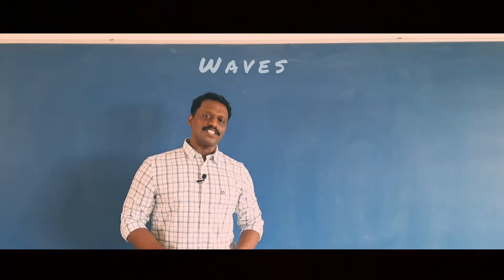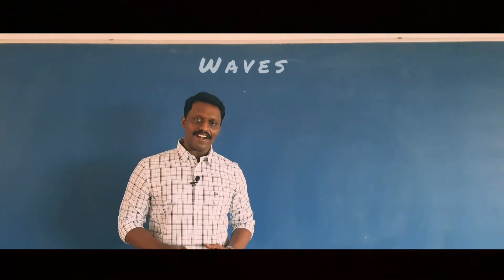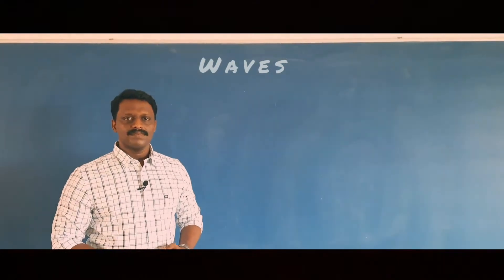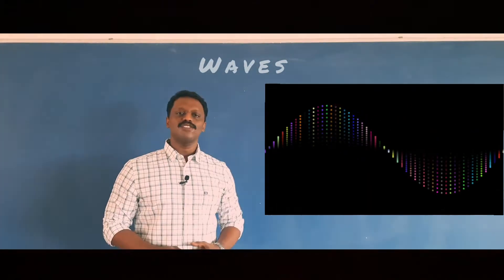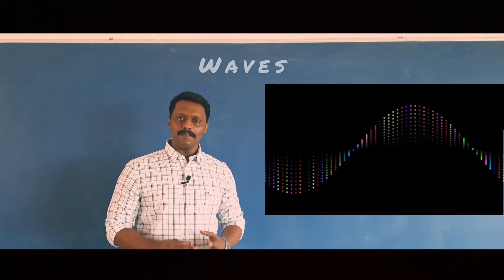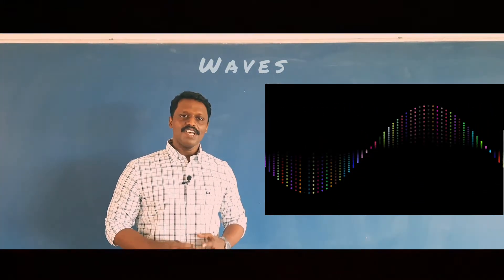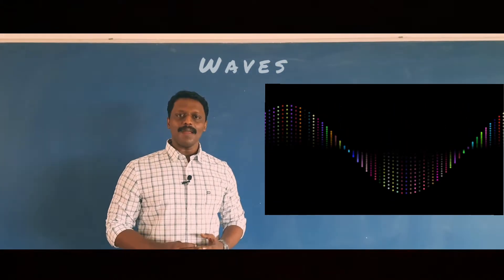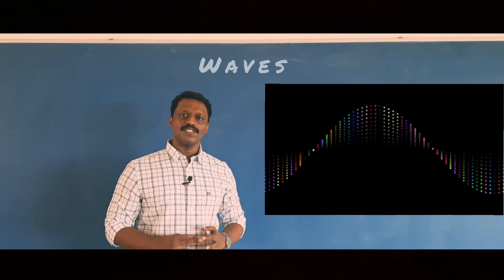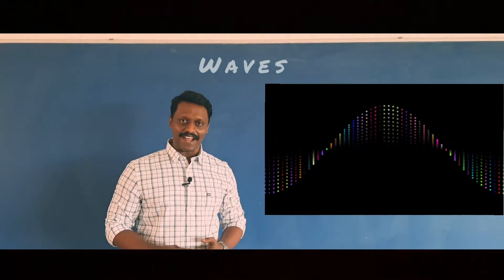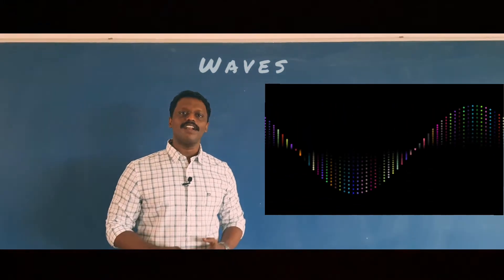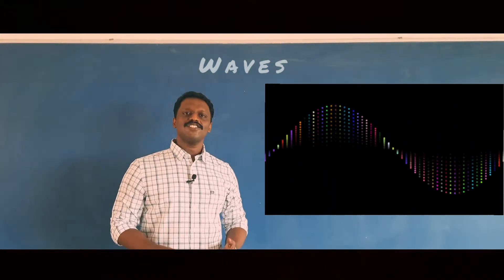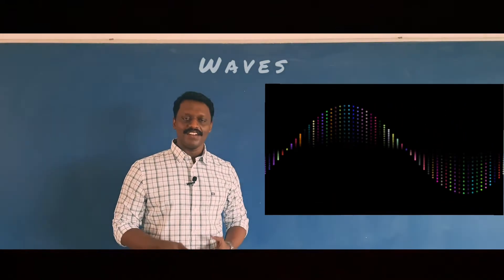Based on energy propagation, waves can be classified as plain progressive and stationary waves. In progressive waves, every particle of the medium vibrates simple harmonically about their mean position with the same amplitude and frequency. There will be a time difference between adjacent particles of the medium as the motion does not initiate at the same time. Therefore, there will be a corresponding phase difference between these particles. In progressive waves, energy is transferred from one point to another in the medium.